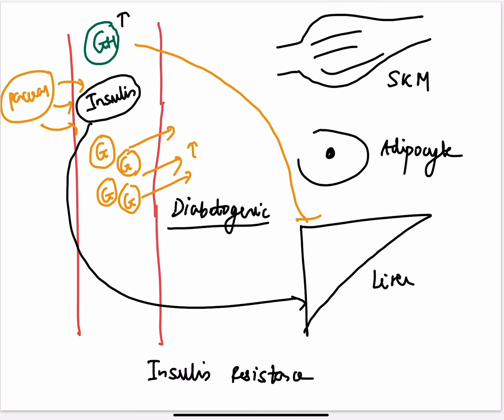So when growth hormone comes, this effect of insulin on the liver disappears. So now the liver produces more glucose.